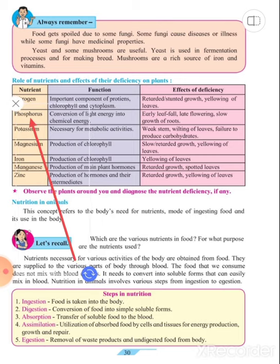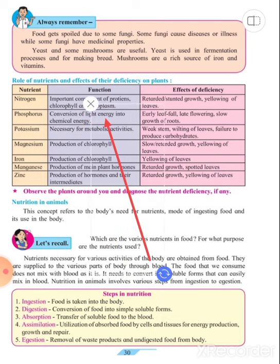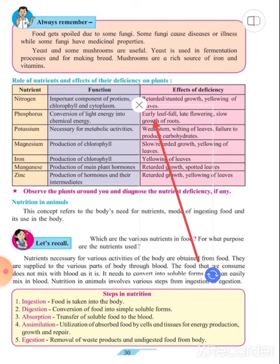The second nutrient is phosphorus. Phosphorus is necessary for the conversion of light into chemical energy. If the deficiency of phosphorus is there, early leaf fall, late flowering and slow growth of roots.